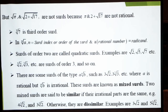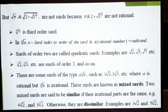اگر کسی irrational part similar ہو تو پھر وہ addition، subtraction، multiplication یا division کے قابل ہوگا۔ Similar surds کی مثال: 4∛2 اور 3∛2 — اس میں cube root of 2 دونوں جگہ موجود ہے، تو irrational part similar ہے، لہذا یہ similar surds کہلاتے ہیں۔ اور اگر ایسا نہ ہو تو dissimilar surds کہلاتے ہیں — مثلاً 3√2 اور 5∛2: ایک میں √2 ہے اور دوسرے میں ∛2، یہ dissimilar surds ہیں۔